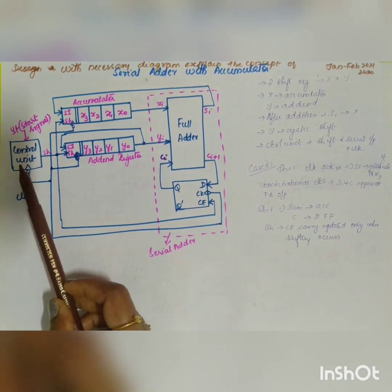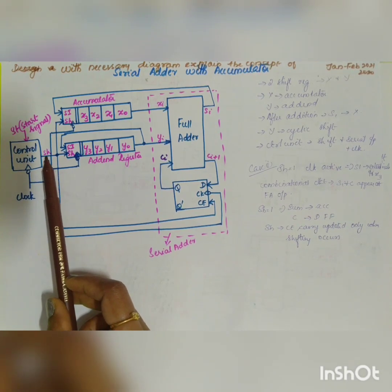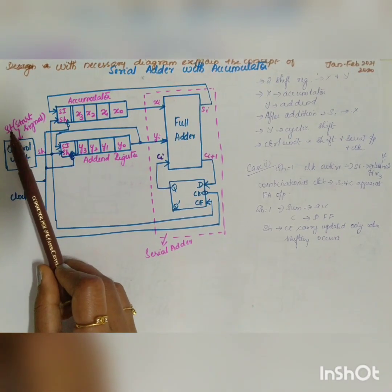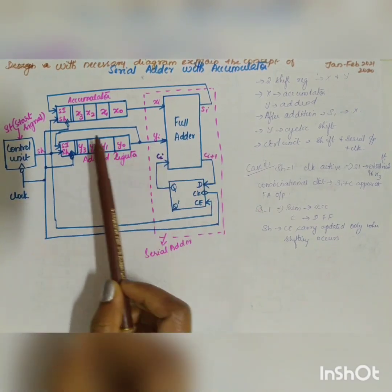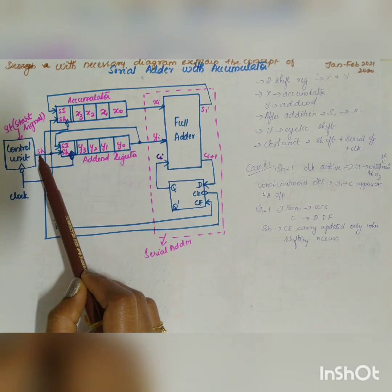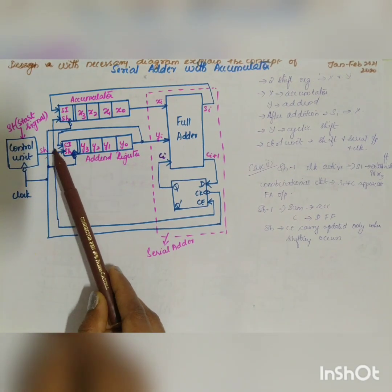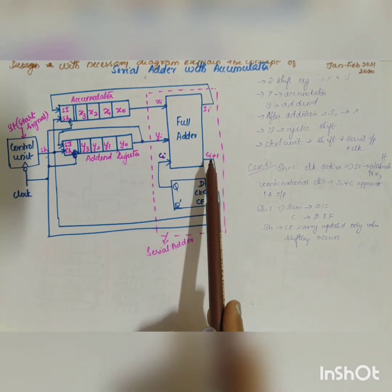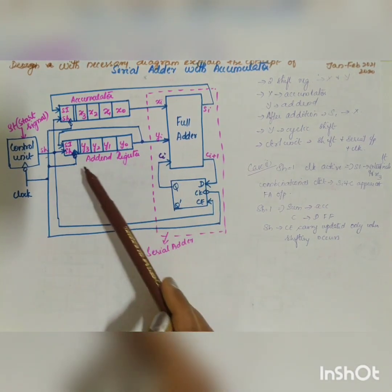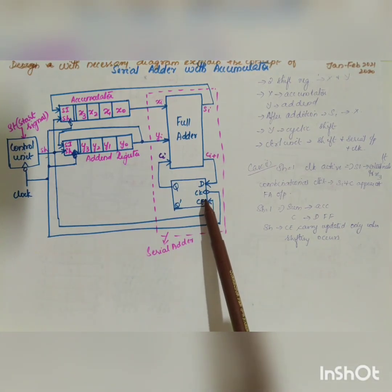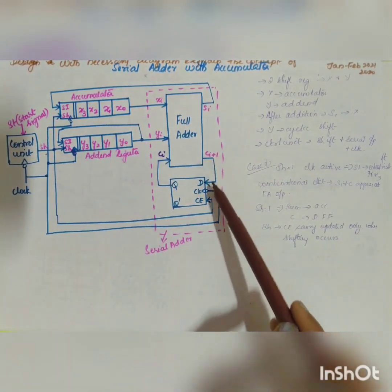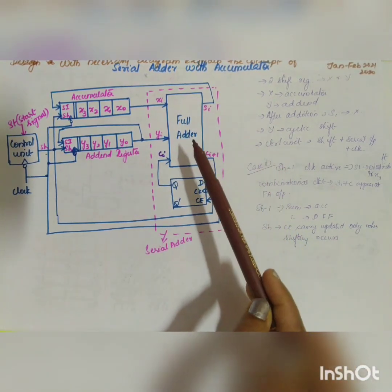The control unit operates three signals: the shift signal, serial input, and clock signal. It starts when a start signal (designated ST) is given. When the start signal is received, shift becomes equal to one, and serial input data is entered. Since the serial adder is a combinational circuit, the sum and carry are generated without depending on the clock. When shift equals one, the clock enable is active, and during the negative triggering edge, the sum is shifted to the accumulator and the carry is shifted to the flip-flop.